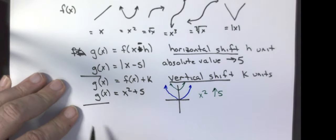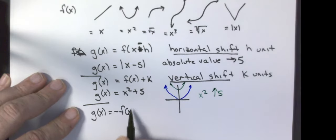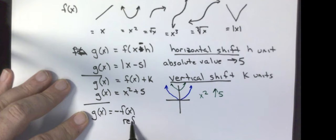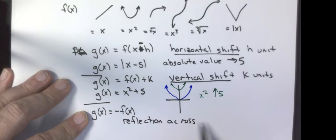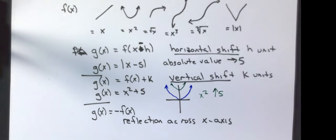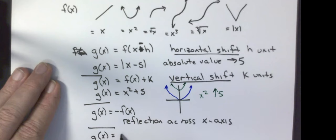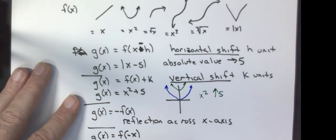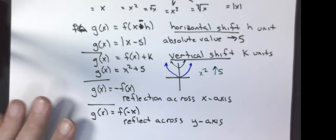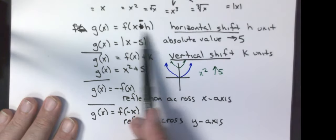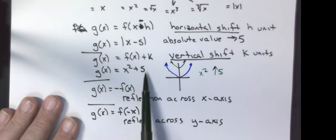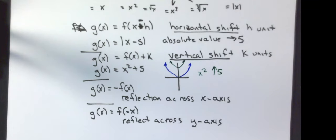Another thing I can get is g of x equals the opposite of f of x. This is a reflection across the x-axis. Basically, it's going to flip your graph upside down. And here I have g of x equals f of negative x and this is a reflection across the y-axis. You need to know if it's inside the function or outside the function. Inside the function is horizontal stuff. Outside the function is vertical stuff. Be able to sketch graphs based off of these transformations.